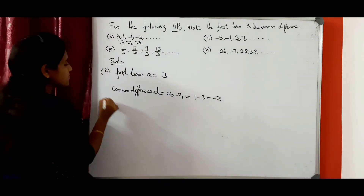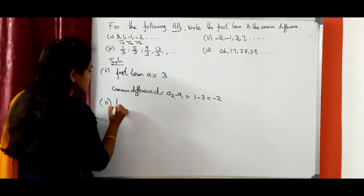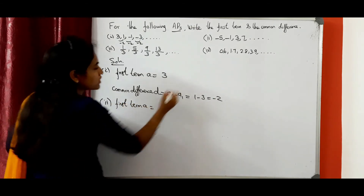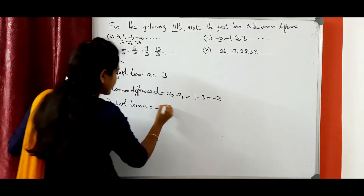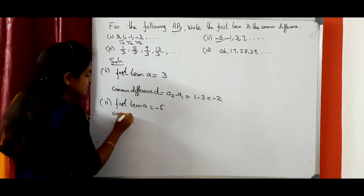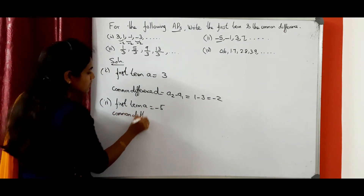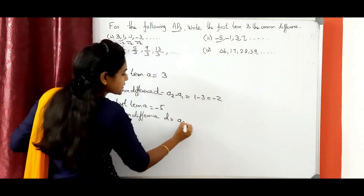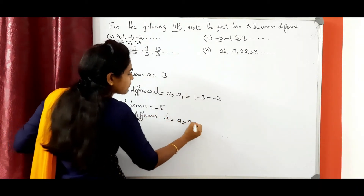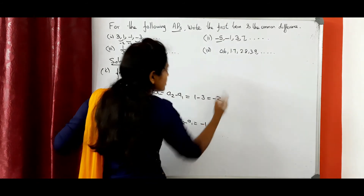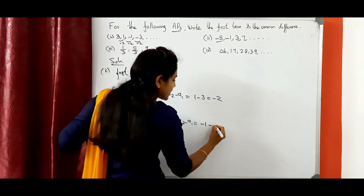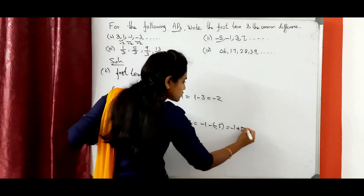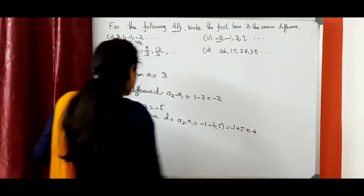Second question: first term A equals minus 5. Common difference D equals a2 minus a1: minus 1 minus (minus 5) equals minus 1 plus 5 equals 4. So 4 is the common difference.